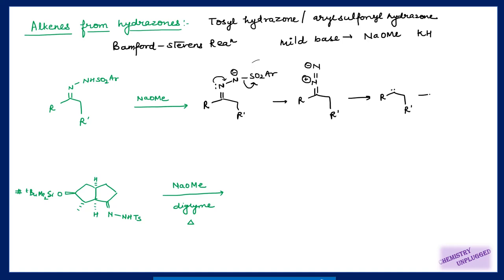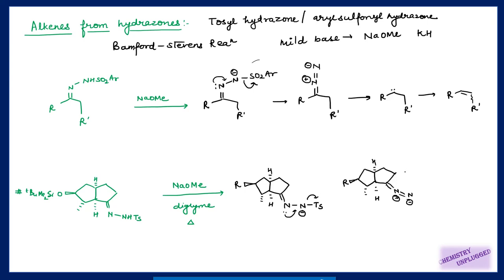The carbene can show proton abstraction and be converted into an alkene. In this example with a mild base and tosyl hydrazone (Bamford-Stevens reaction), we first remove this proton. Then the lone pair of electrons is given to this bond, the tosylate is removed, and a carbene is generated. Proton abstraction can take place from this carbon or the adjacent one, but placing the double bond at this position is more stable — so we get that as the final product.